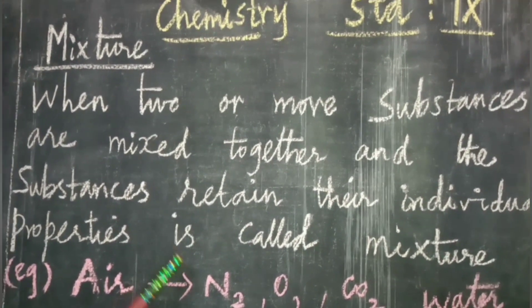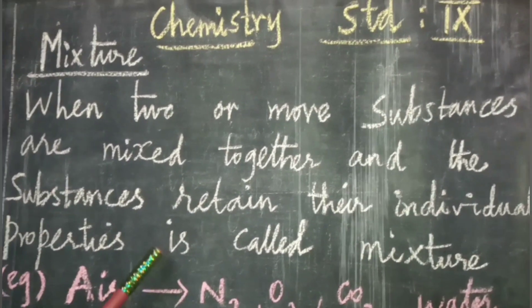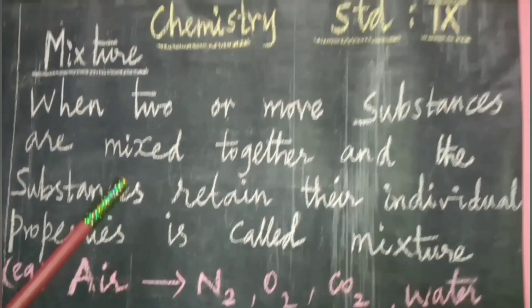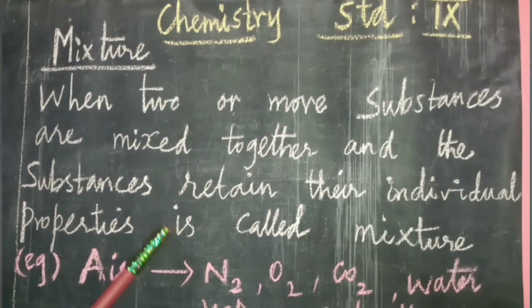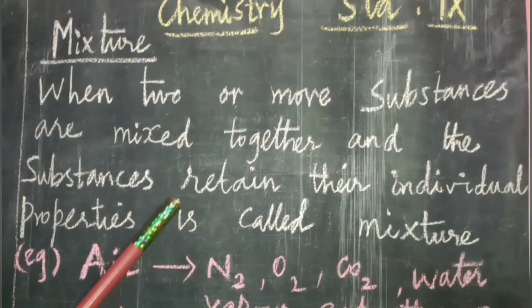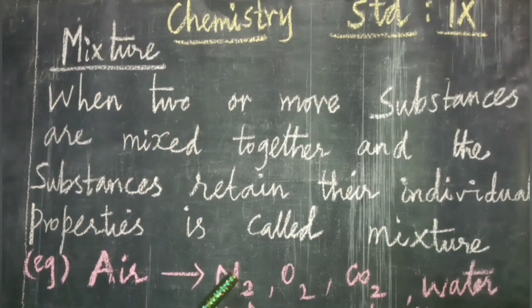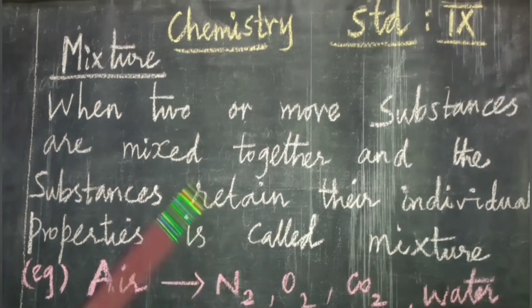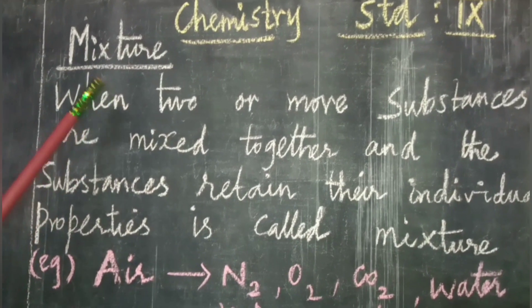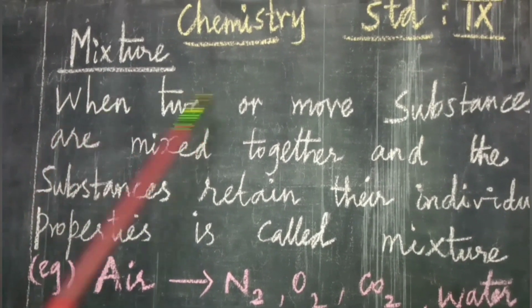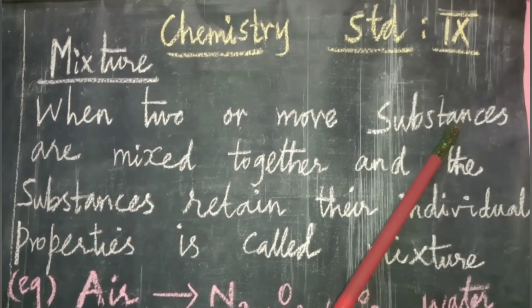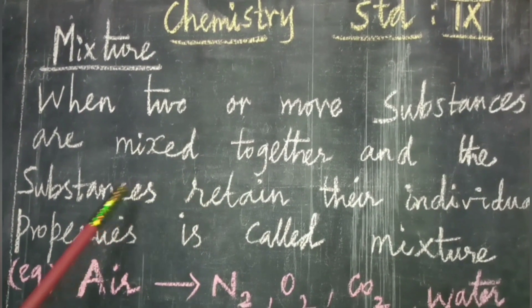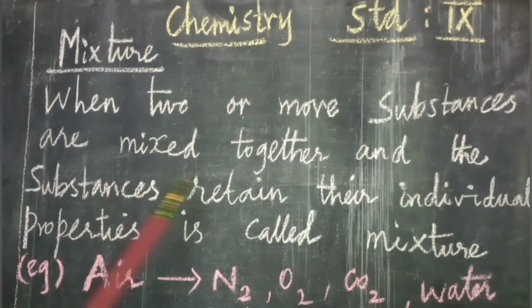Examples of elements include copper, gold, silver, and iron. What is a compound? A compound is formed when two or more elements combine together. Examples include sodium chloride, carbon dioxide, water, and so on.